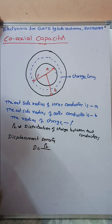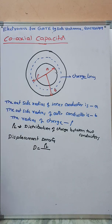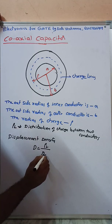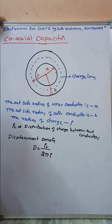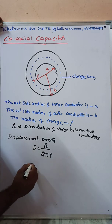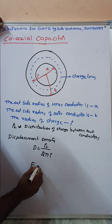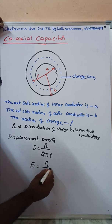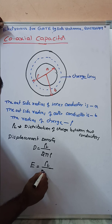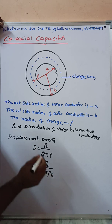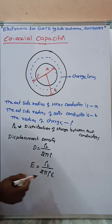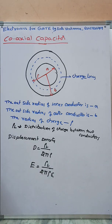The electric field between the two conductors is given by E = rho_L / (2*pi*rho*epsilon), where rho is the radius of the charge and epsilon is the permittivity.